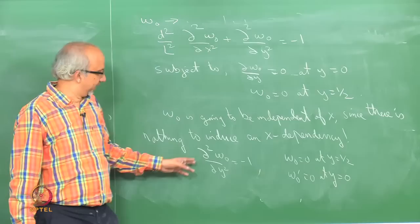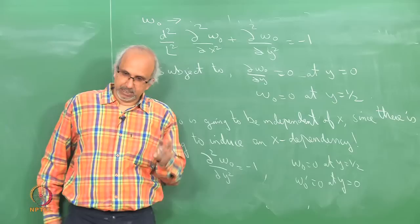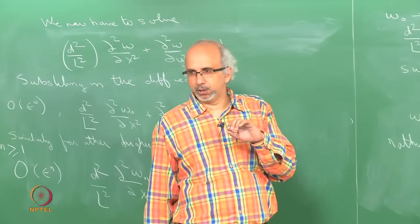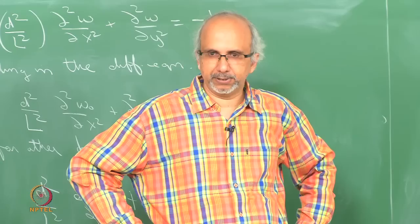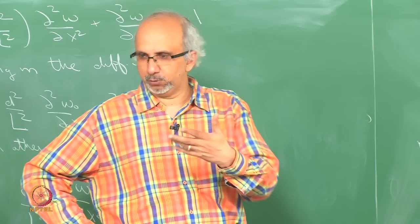Once we get the solution for w₀, we go back and find the solution for w₁, then w₂. One of the things we would also like to ask is: what is the effect of these wall perturbations on the flow rate through the channel? If we keep the pressure drop the same, does the wavy channel result in an equal, higher, or lower flow rate compared to the flat channel? That gives an idea of whether you can process more chemicals in your channel.